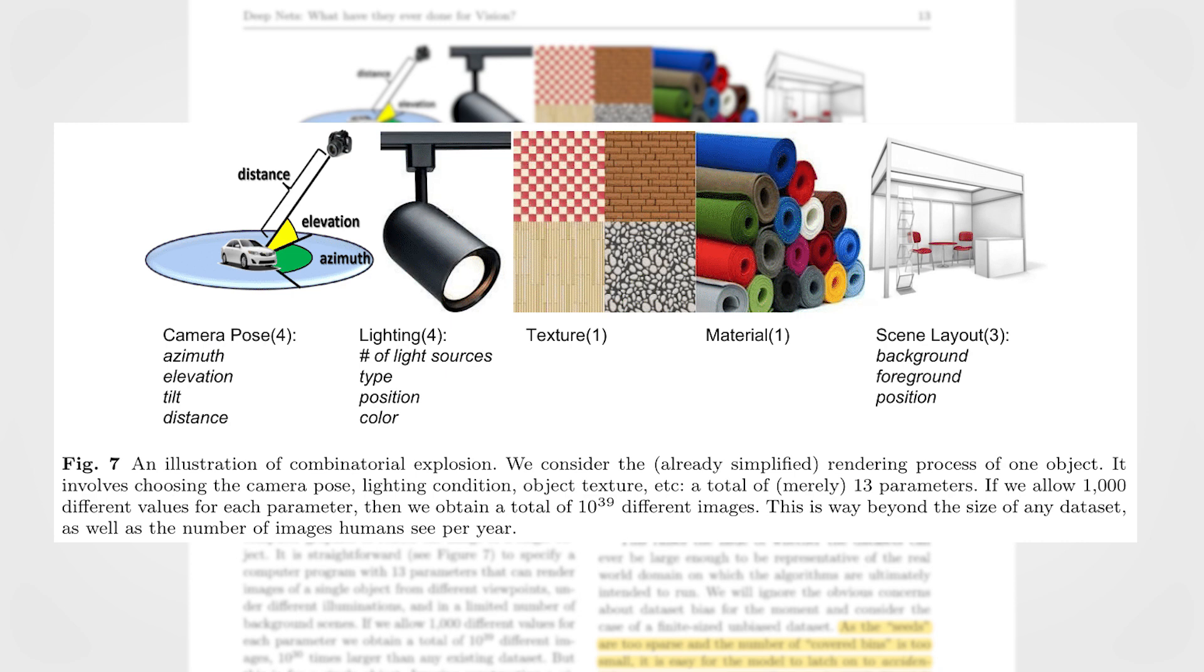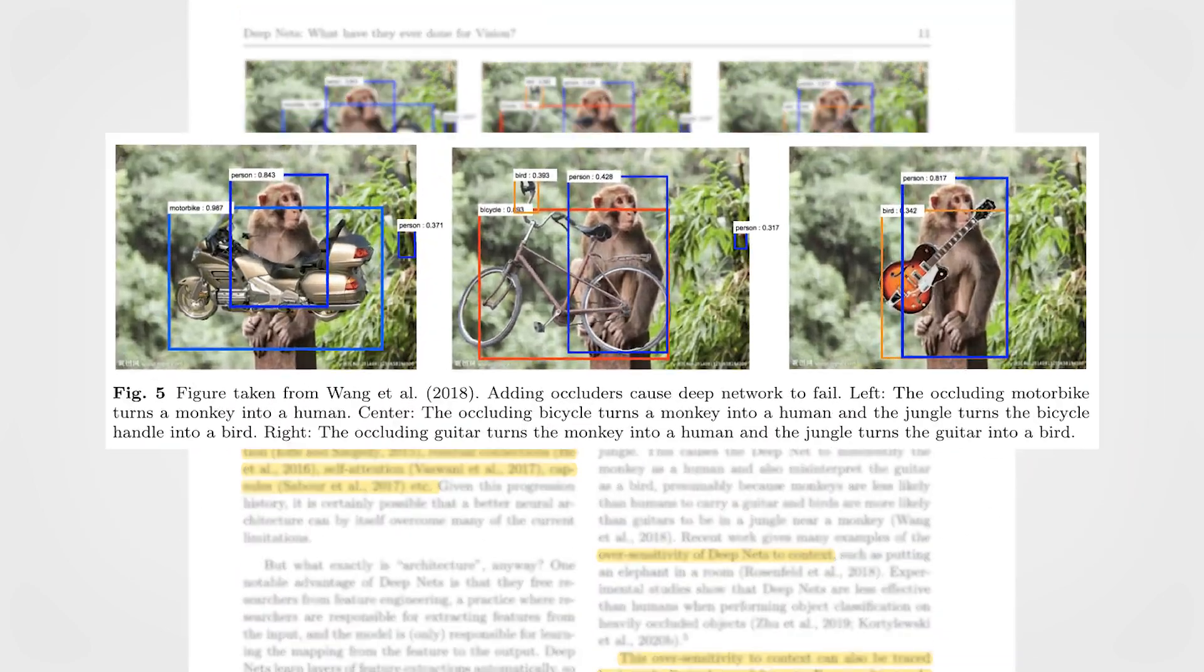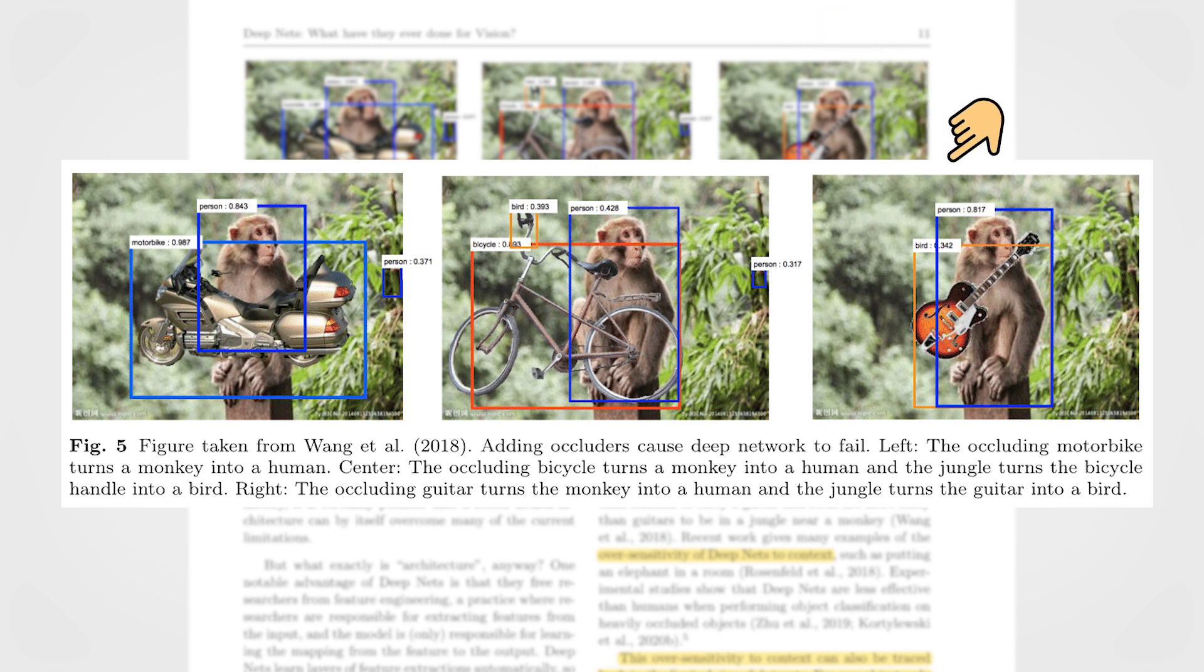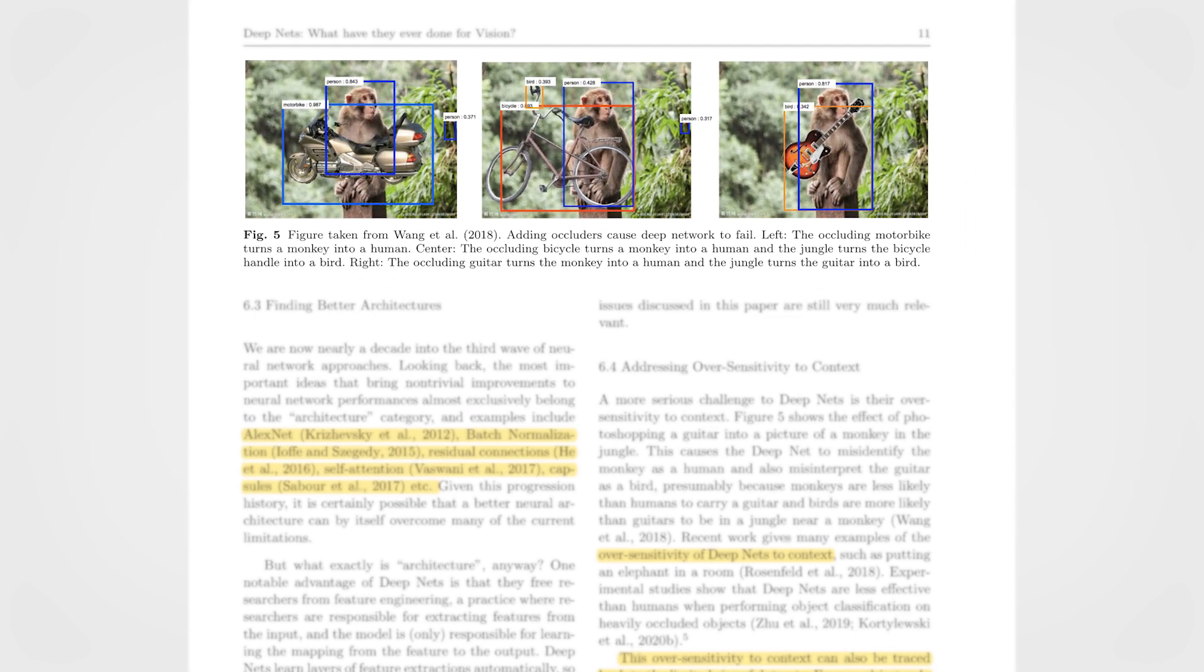The current datasets only cover a handful of these multitudes of possible variations for each object, thus missing most real-world situations that it will encounter in projection. It's also worth mentioning that since the variety of images is very limited, the network may find shortcuts to detecting some objects, as we saw previously with the monkey, where it was detecting a human instead of a monkey because of the guitar in front of it. Similarly, you can see that it's detecting a bird here instead of a guitar, probably because the model has never seen a guitar with a jungle background.